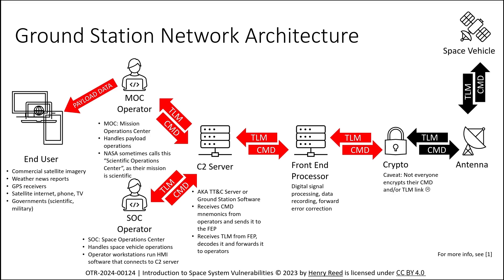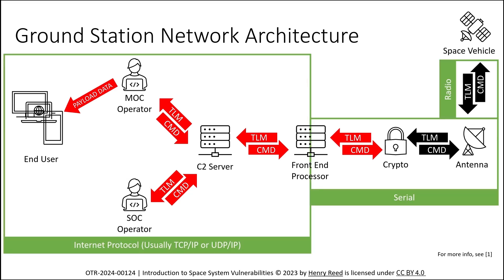The crypto layer is critical — unfortunately, not everybody encrypts the command and telemetry link. There are talks at DEFCON on signals collection against unencrypted space vehicle links. You should almost always encrypt all your data, and especially commanding — that's essentially an absolute requirement these days. The crypto talks to the antenna, which communicates with the space vehicle over RF. Everything between the FEP and the antenna, including the crypto, is generally over serial. Everything else is generally over TCP/IP or UDP/IP.